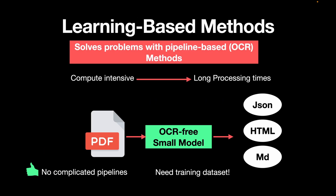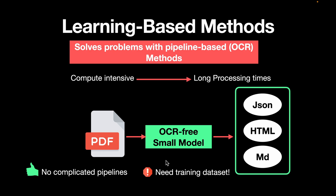One major limitation of pipeline-based methods is that they rely on an OCR engine, but learning-based methods overcome this problem. On the negative side, they are compute-intensive and hence take longer processing time. What happens is that you feed the PDF to a small or large model, which processes it, detects the different parts of the document, and directly outputs JSON or HTML format. The major drawback is that it needs a training set, but on the positive side it doesn't have complicated pipelines — though it is compute-intensive.